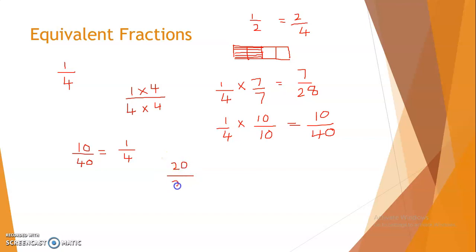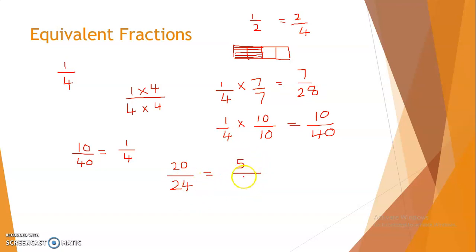Take 20 divided by 24 as a challenge. We know 20 is a multiple of 4, and 24 is also a multiple of 4. So divide both by 4: 20 divided by 4 is 5, and 24 divided by 4 is 6. So 5 by 6 is the equivalent fraction. I hope this is clear to you, children.